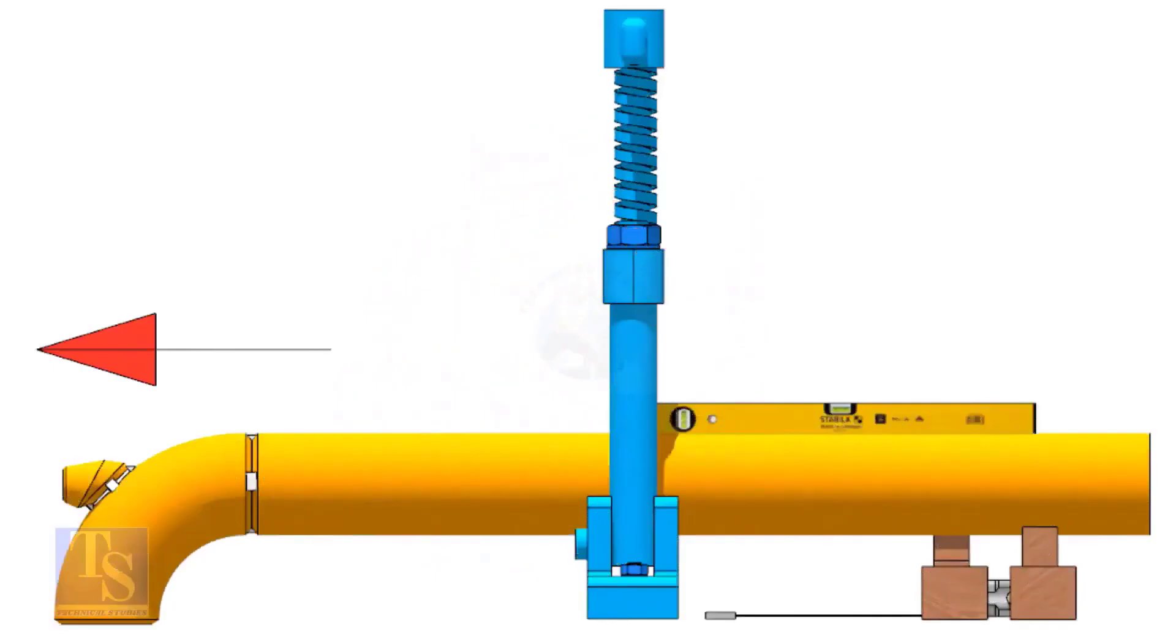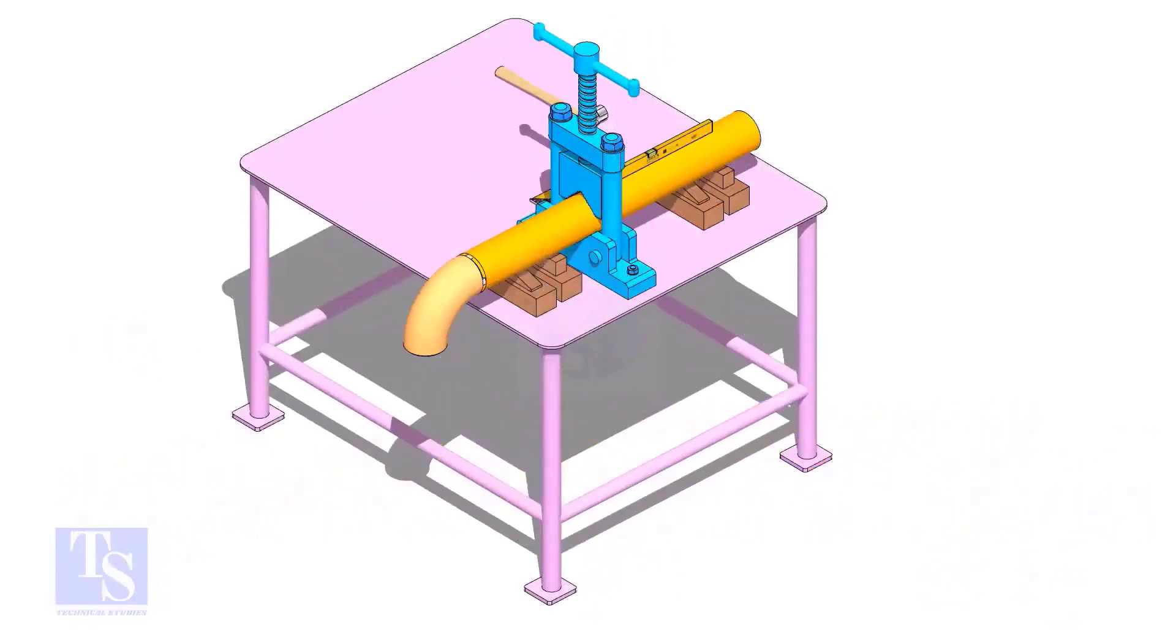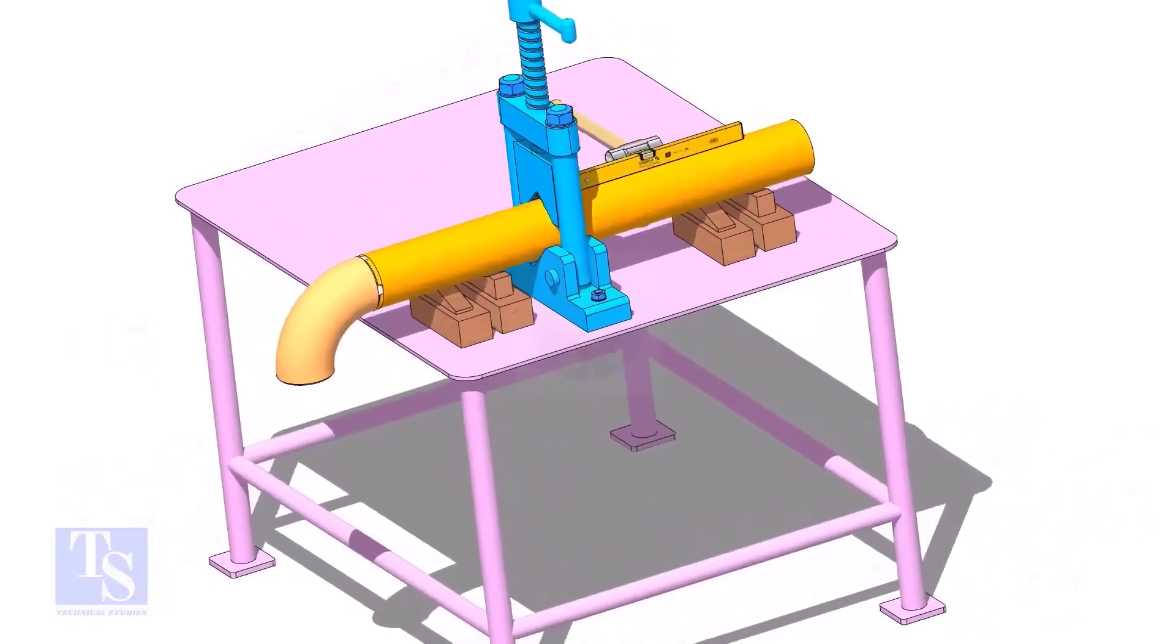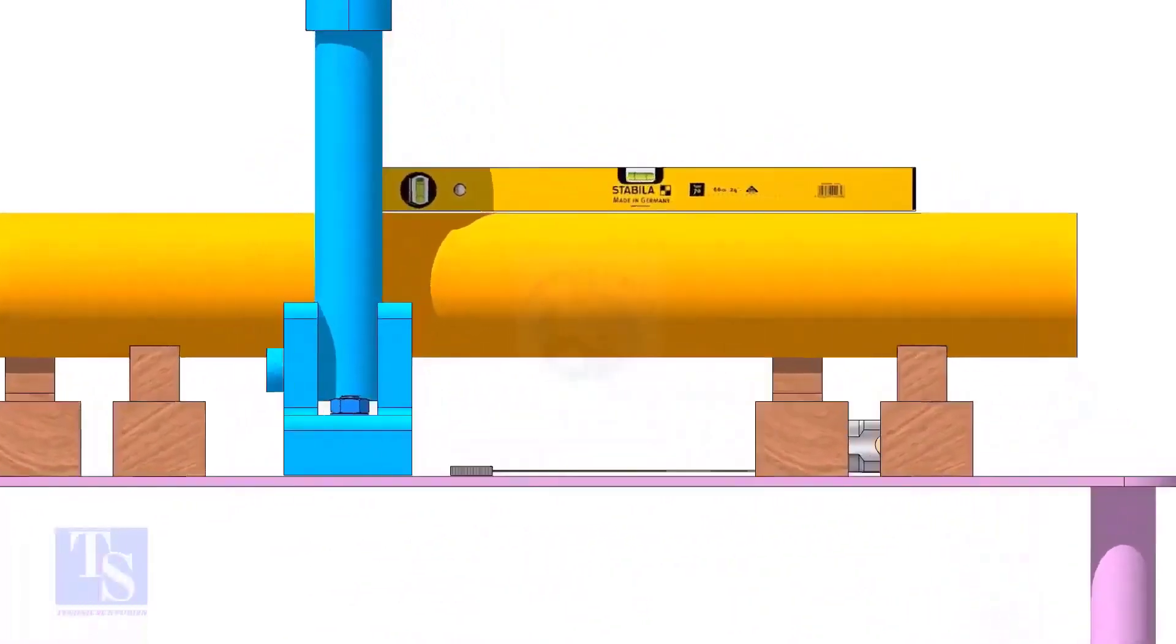I've seen guys making mistakes when they fix the direction of the elbow. Please be careful. Level the pipe and the elbow face. If necessary, put packings below the pipe.